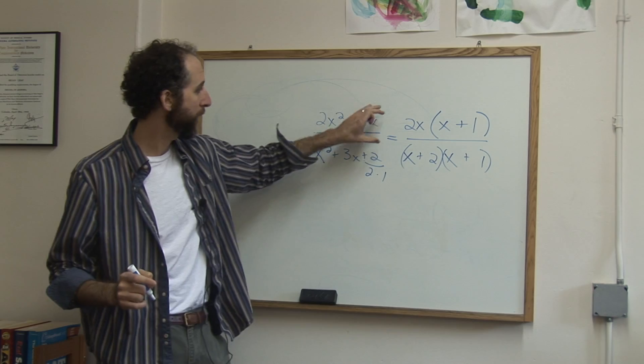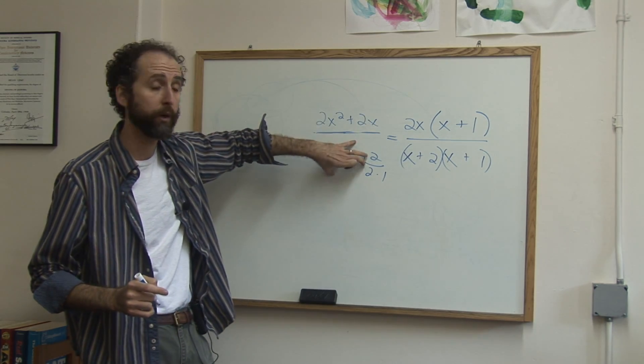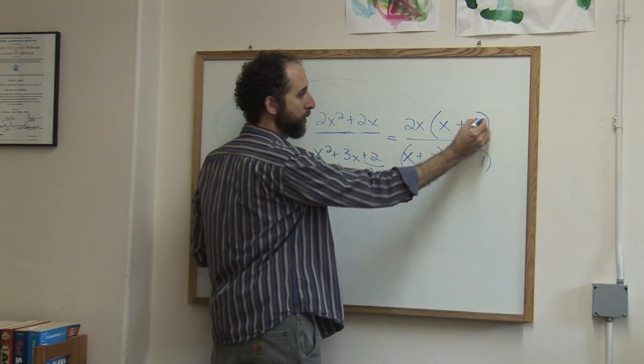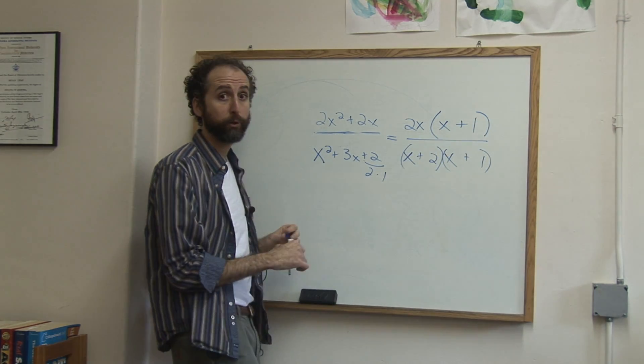Now we've factored this, we've factored this. We're going to reduce, see if anything cancels out. We see an (x+1) on top and on bottom. So those are going to reduce out.